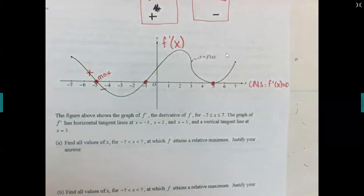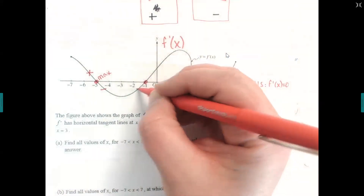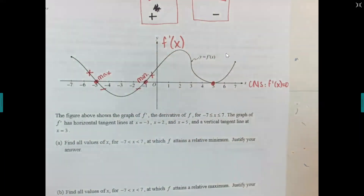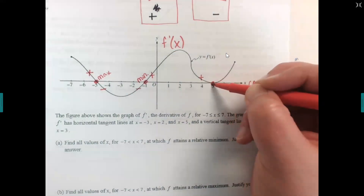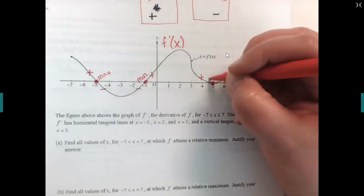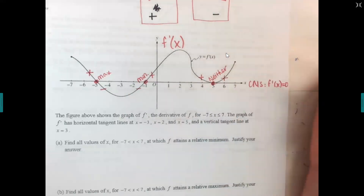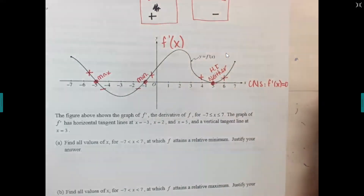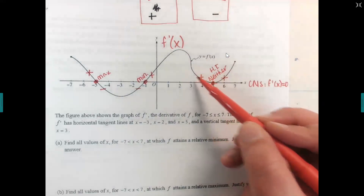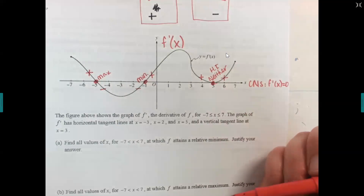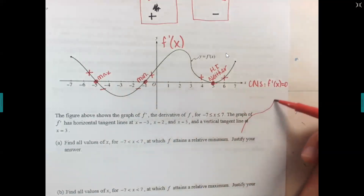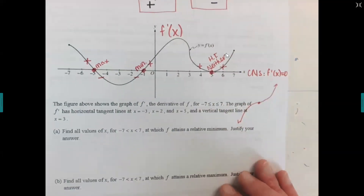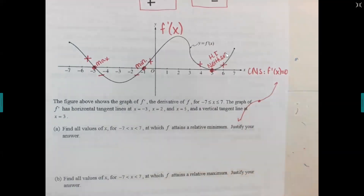That sign change from positive to negative makes it a max. At negative one, it goes from negatives to positives, so that's a min. At five, it kind of bounces on the x-axis but stays positive, so that would be a 'neither' — also called a horizontal tangent, because essentially the graph would be increasing, flatten out when it hits zero, but then keep increasing.